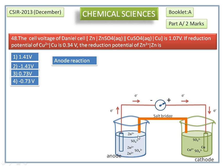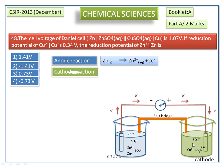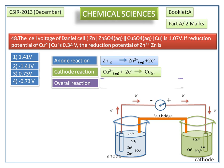On the left side, oxidation occurs: zinc is oxidized to Zn²⁺ and two electrons. On the right side, reduction occurs: copper ions are reduced to copper. The overall cell reaction is shown here.